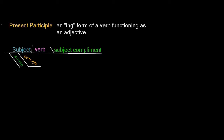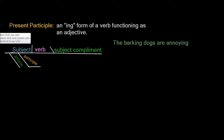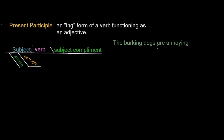Let's take the sentence: 'The barking dogs are annoying.' We have two words here that look like verbs. We have the be verb 'are,' and we have 'barking.' However, the dogs aren't barking here — this is just describing which dogs, indicating which dogs, the ones that are barking. And that — 'barking' — is our participle. Our main verb is the be verb 'are.'